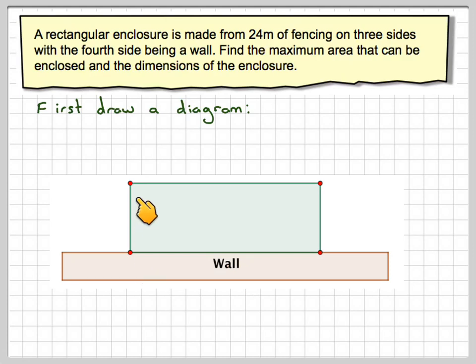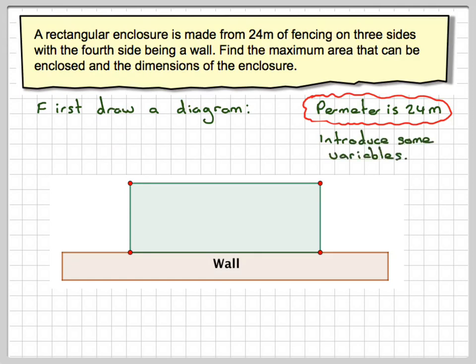But I do know that this length here plus this length here plus this length here must be equal to 24 metres. And the problem is to find what will be the maximum area I can enclose with 24 metres on three sides. So what you need to do is to introduce some variable or a variable.